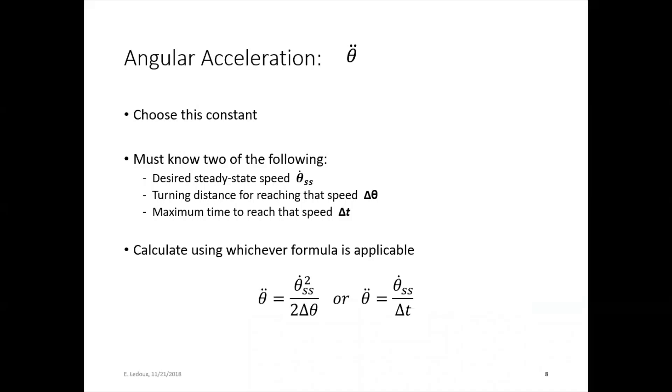The angular acceleration, θ̈, is something that you choose, depending on how you want your system to behave. So to choose it, you have to know two of the following things. Desired steady state speed, the distance that you would turn through to reach that speed, or maximum time to reach that speed. So you figure out how fast you want to be going, and then you use one of these formulas.